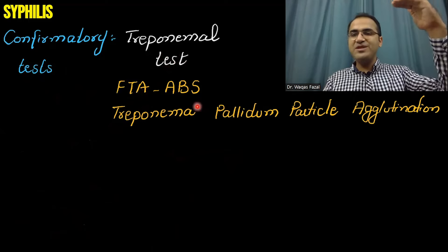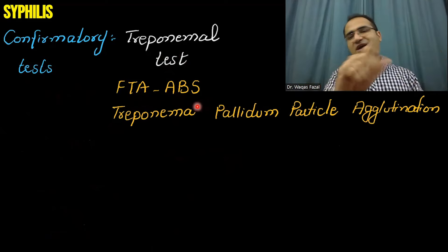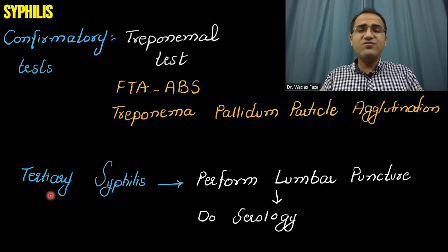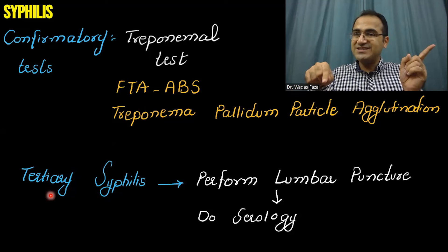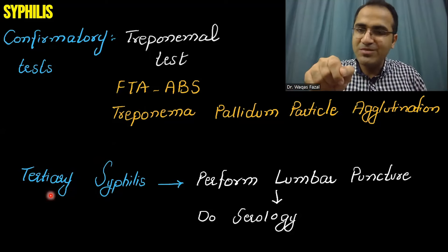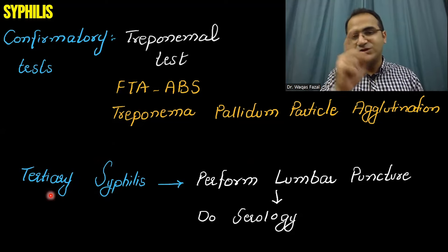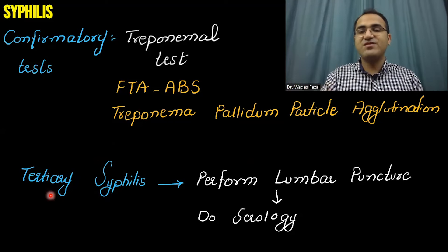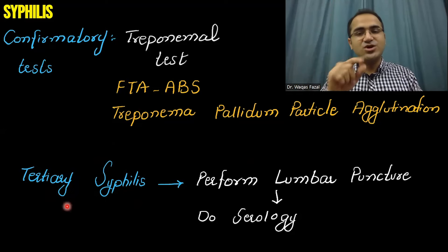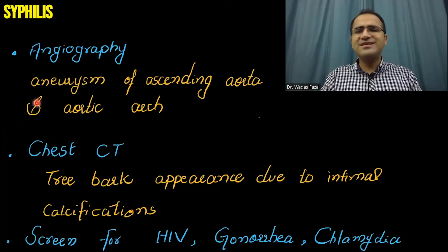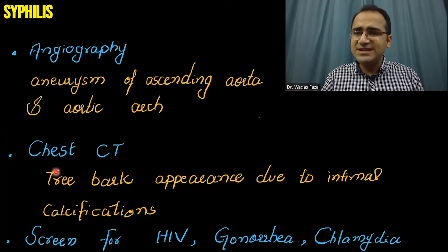The confirmatory test for syphilis is the treponemal test FTA-ABS. To summarize: for primary syphilis use dark field microscopy; for secondary and tertiary use RPR and VDRL for screening, and FTA-ABS for confirmation. In tertiary syphilis with CNS involvement or suspected meningitis, perform a lumbar puncture, collect CSF, and perform serology on the CSF — this is the most sensitive and specific test for CNS involvement of syphilis. You can also perform angiography to look for aneurysm, chest CT, and screen for HIV and other STIs.